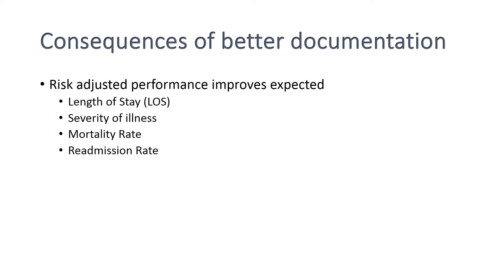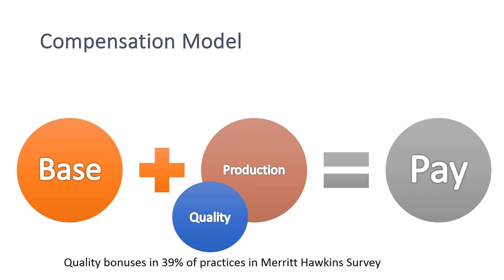Better documentation also impacts risk-adjusted performance because the DRG influences estimated length of stay, severity of illness, mortality rate, and readmission rate. This is important because compensation models often include a quality measure that may be based on your performance with length of stay, mortality rates, documentation quality, or other related factors.